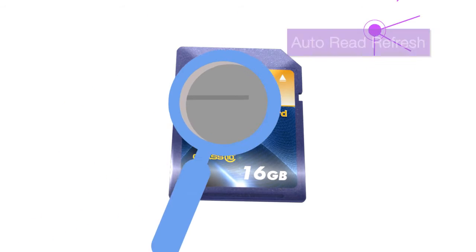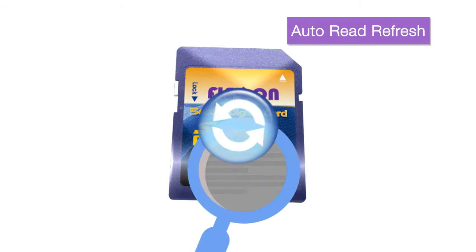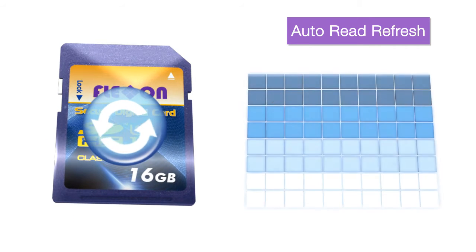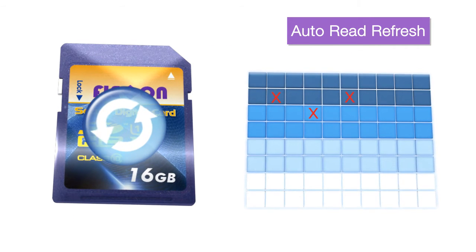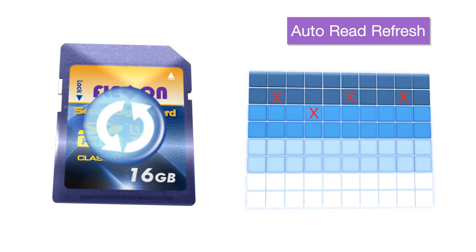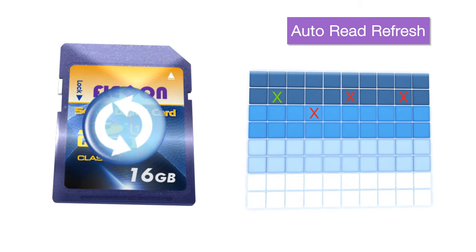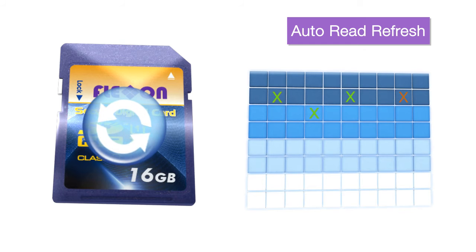The auto-read refresh function enhances performance by reducing uncorrectable errors created by repeated reads of bit data. FlexOn's firmware auto-refreshes the bit errors before they reach a preset threshold level, moving the data to a new block.